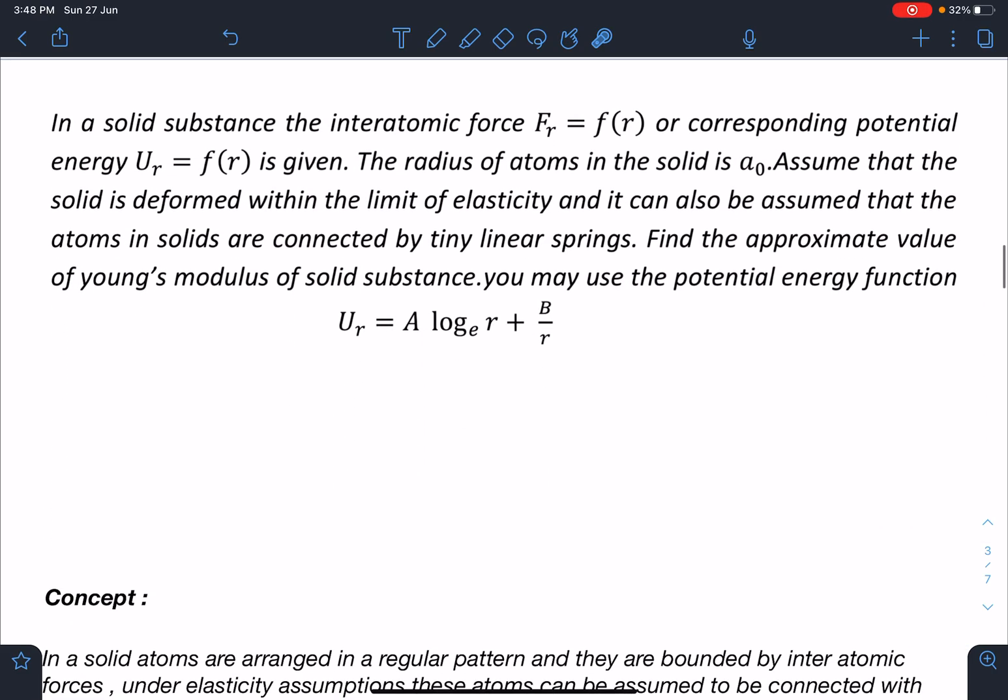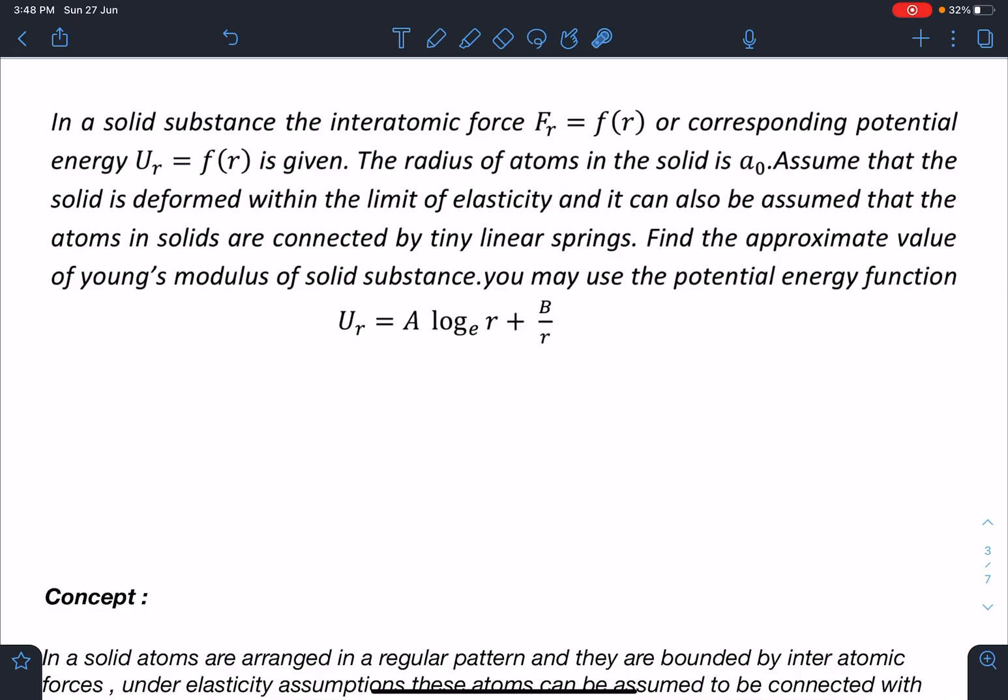Here is the statement of this problem: In a solid substance, the interatomic force Fr which is given as a function of r, or the corresponding potential energy Ur which is also a function of r is given. The radius of atoms in the solid is a₀. Assume that the solid is deformed within the limit of elasticity and it can also be assumed that the atoms in solids are connected by tiny linear springs. Find the approximate value of Young's modulus of solid substance. You may use the potential energy function as Ur = A ln r + B/r.